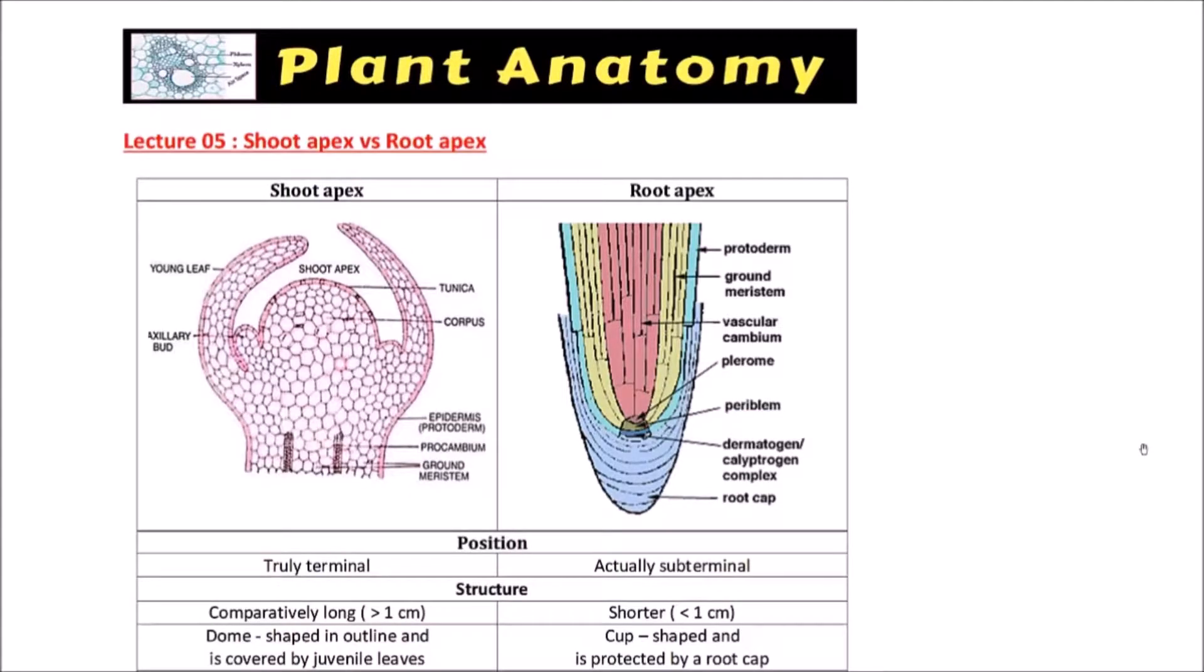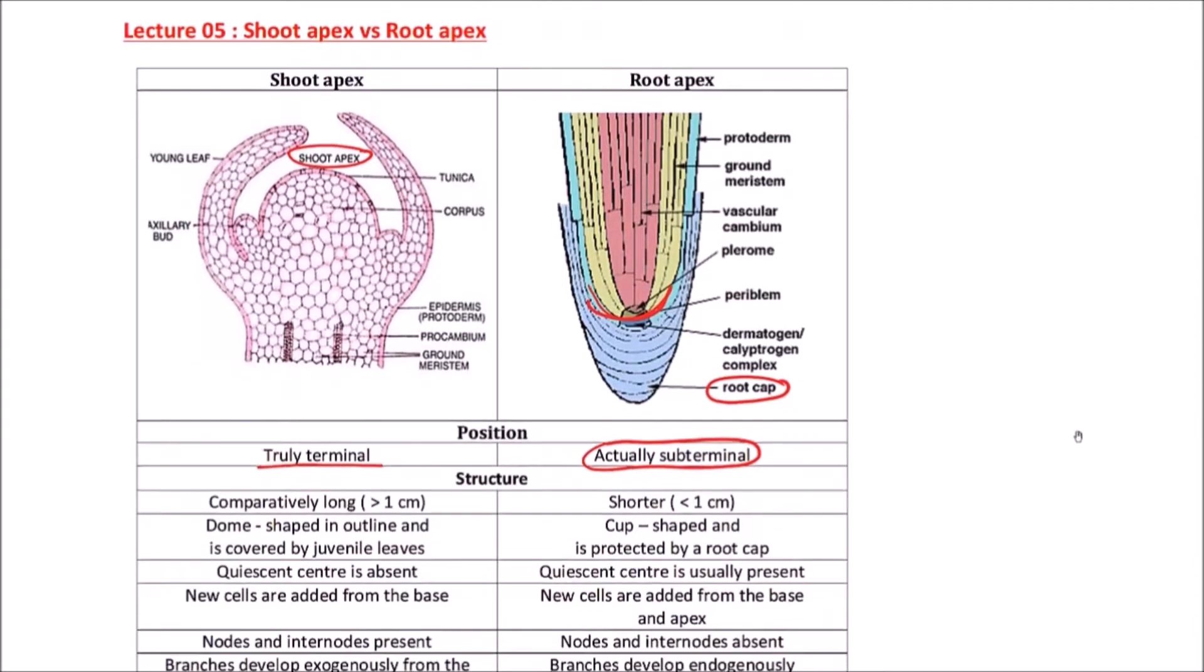Welcome to Studio Biology. In this video, I am going to discuss the differences between a shoot apex and a root apex. First of all, position: the shoot apex is truly terminal, while the root apex is actually subterminal because the root cap is terminal, not the root apex.